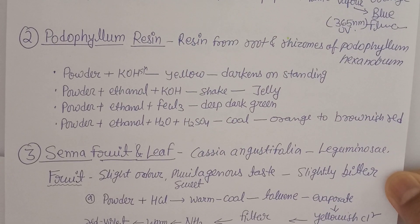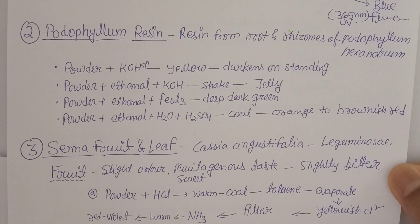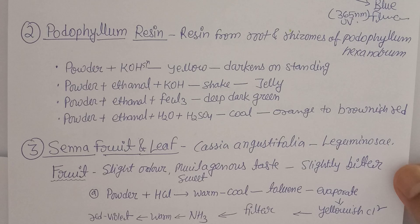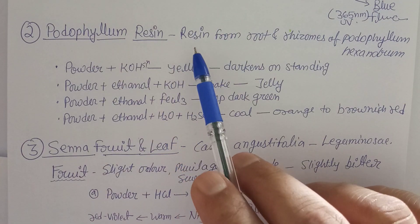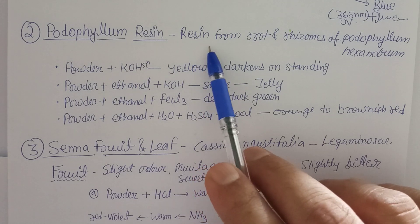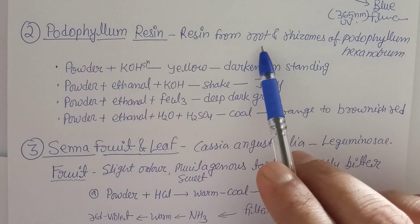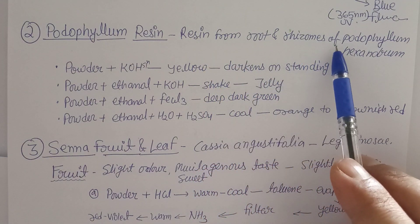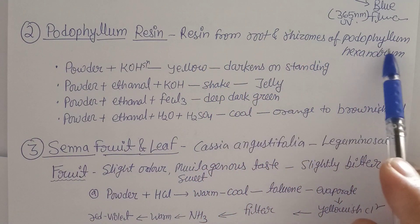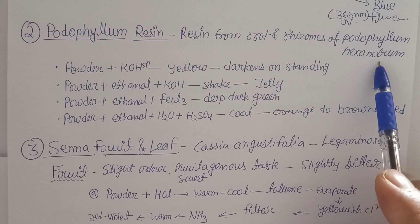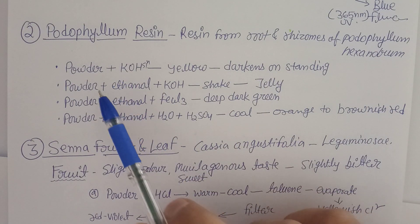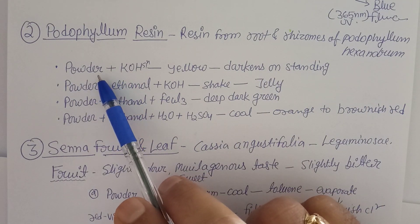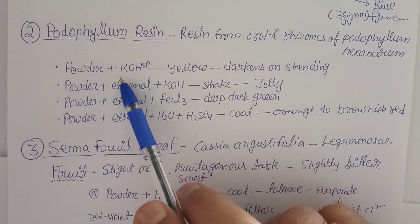The second drug is Podophylloresin — a very important anti-cancer drug. It is a resin obtained from the root and rhizome of the plant Podophyllum hexandrum. A series of tests has been given. First: take the powder of the resin, add potassium hydroxide (KOH) solution, and you will get a yellow color.